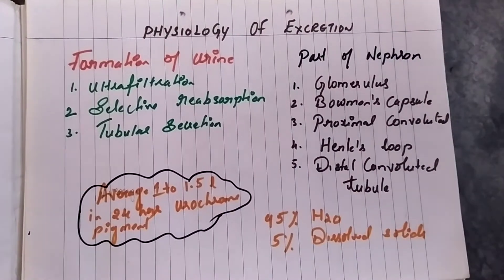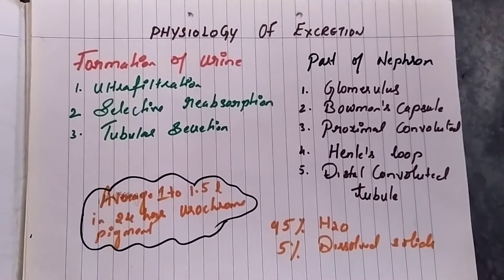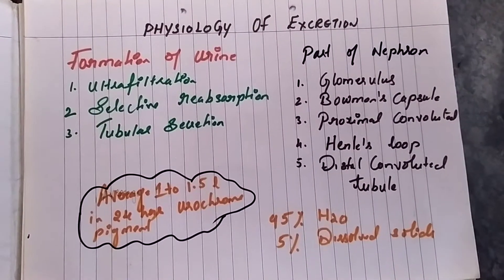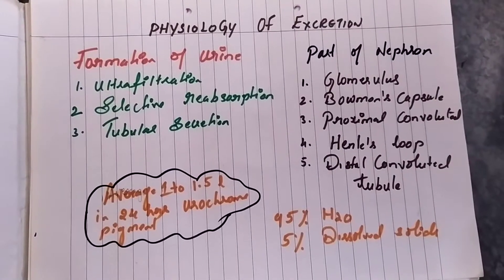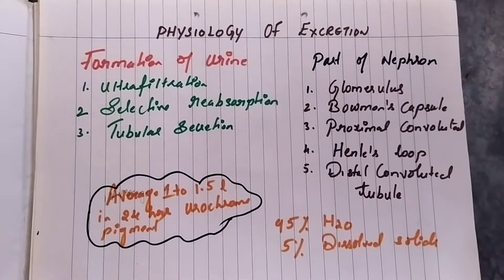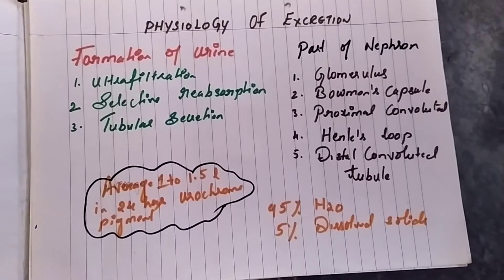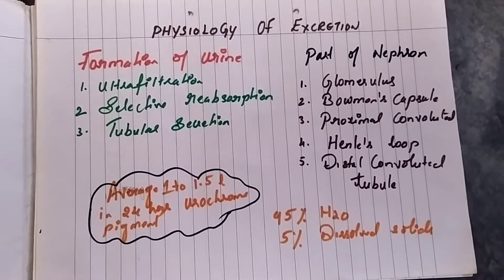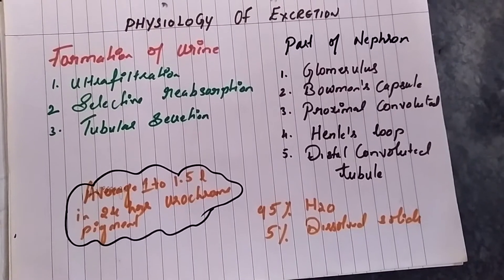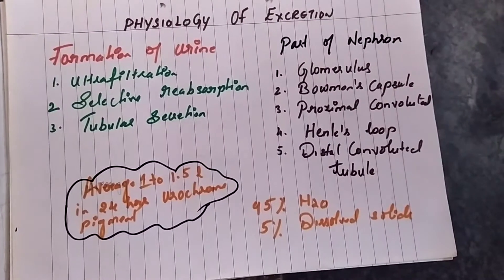Today we are going to go into a little bit more detail about the physiology of excretion. So let us learn how urine is formed — the formation of urine is the main part to be studied today. The formation of urine is accomplished in three steps: first is ultra filtration, second is selective reabsorption, and third is tubular secretion.